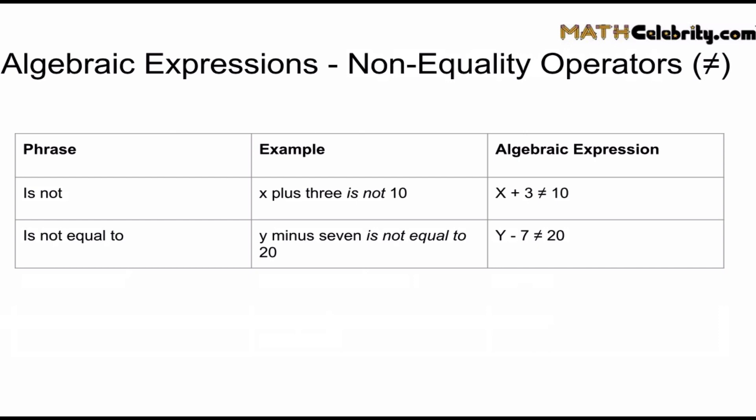And the opposite of equality is non-equality. And here's the two most common non-equality operator phrases: is not and is not equal to. So all you do, you'll approach it the exact same way you would an equation. But instead of the equal sign, you're doing the equal sign with a slash through it. Telling you that no, x plus three is not equal to ten. And no, y minus seven is not equal to twenty.